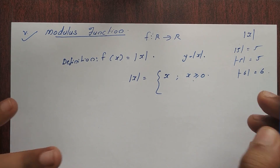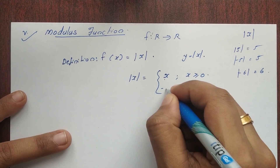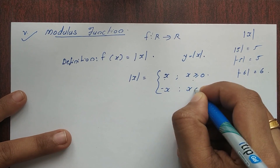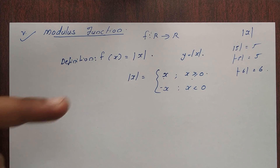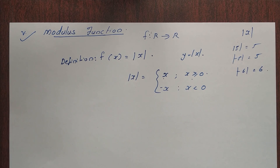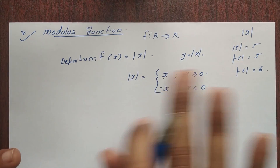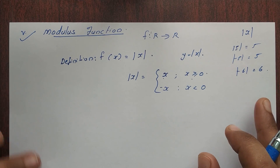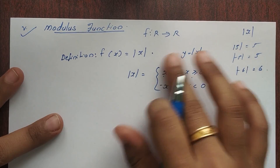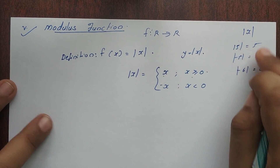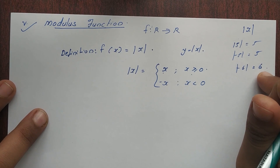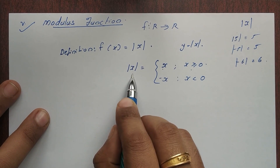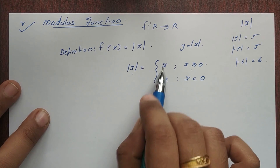That is positive numbers, and minus x when x is less than 0. You should know this — there is a confusion here. The concept is: modulus function gives the output as a positive number. If we choose the modulus function, we should classify into multiple parts.